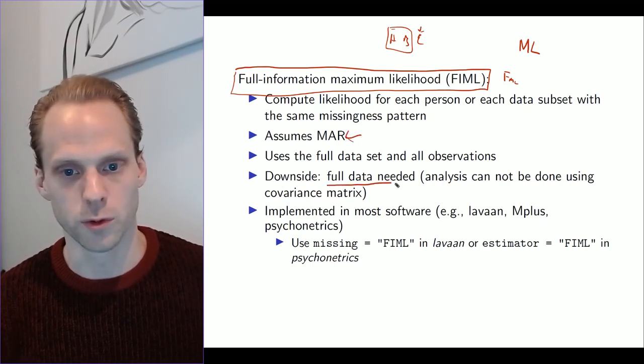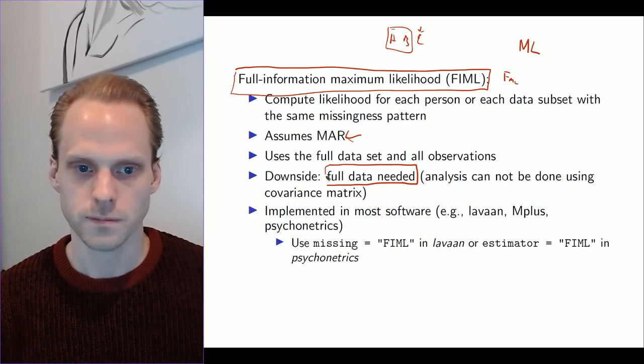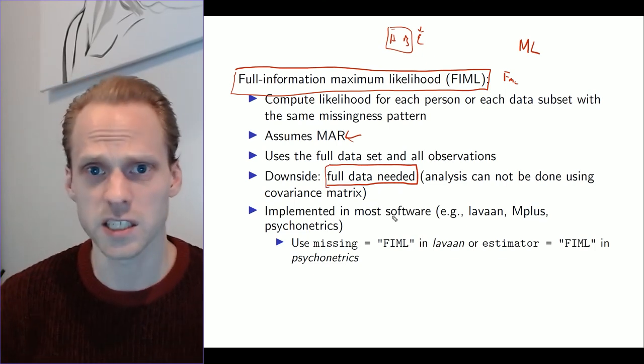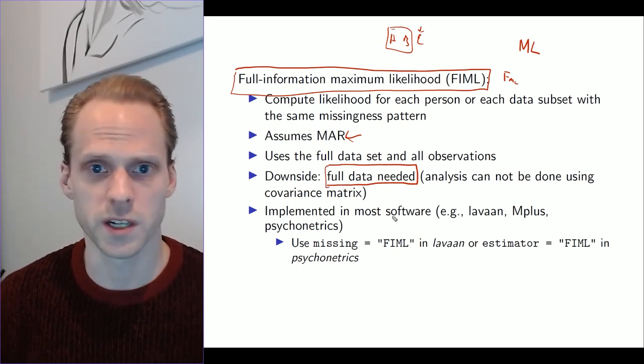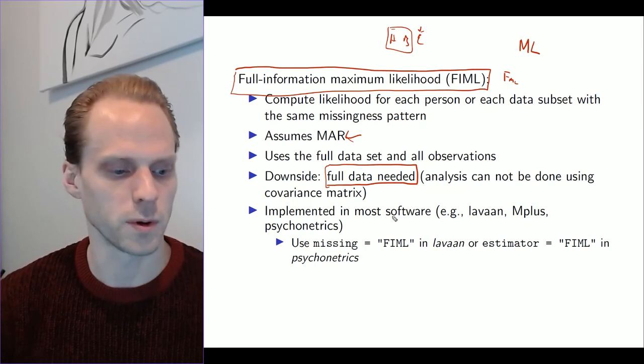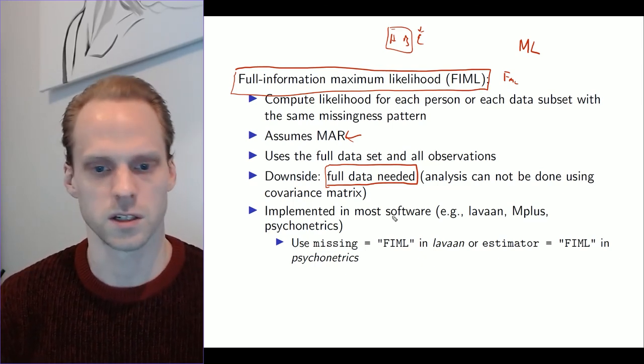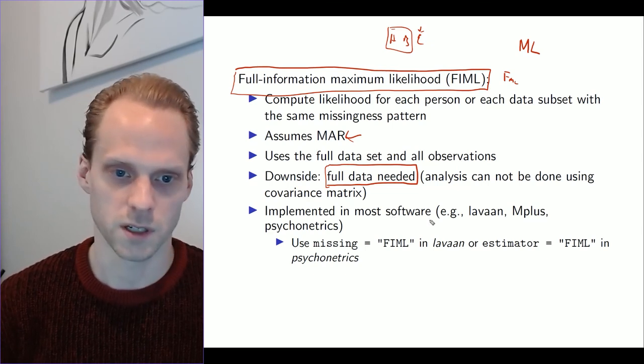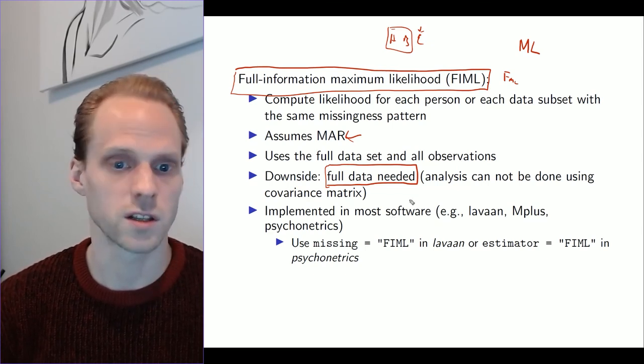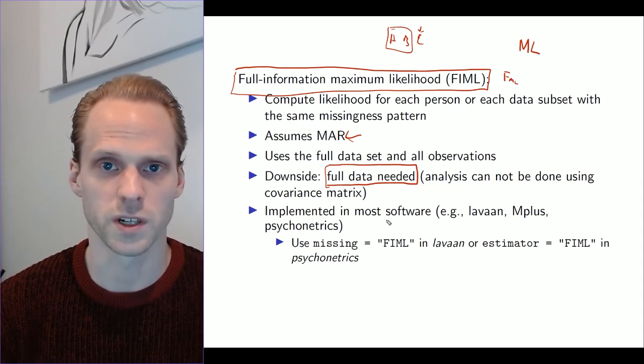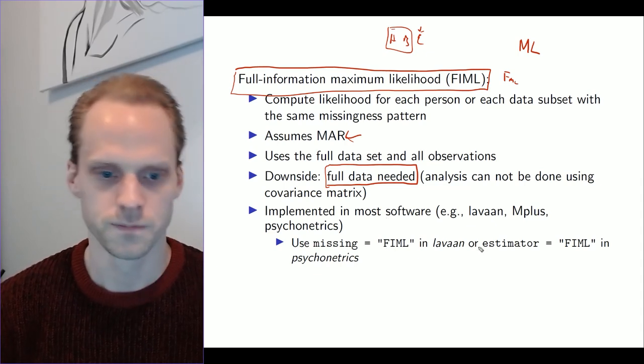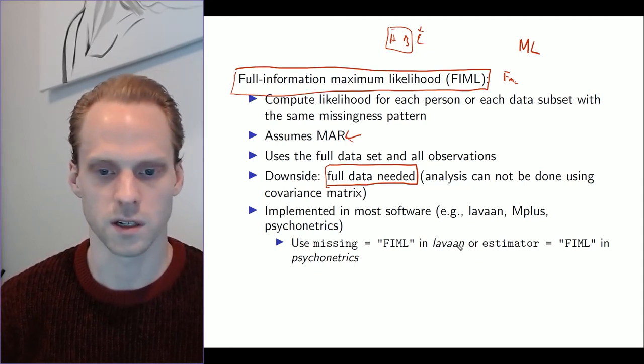This assumes MAR as well. A downside is that you need full data, and that is a bit of a shame because it is nice that we can put this covariance matrix in our appendix and then have people be able to reproduce our analysis perfectly. But other than that, and it can also be slower, but actually most software now is quite fast handling this. Other than that, it works very well.